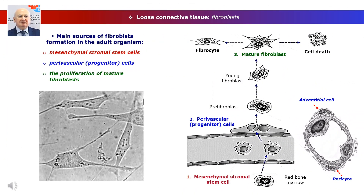The high proliferative activity of fibroblasts and their ability to effectively maintain the stroma are explained by the simultaneous existence of three main sources of their formation in the adult organism. The key elements of the fibroblastic differentiation series are mesenchymal stromal stem cells of red bone marrow, perivascular seminomad stem cells, and mature fibroblasts. Perivascular stem cells are descendants of mesenchymal stromal stem cells fixed in the walls of small blood vessels. This category includes adventitial cells and pericytes — pericytes being located between the basal membrane layers of blood capillary endothelium.